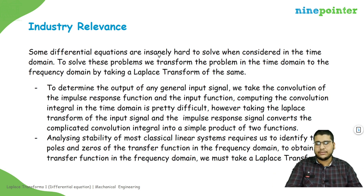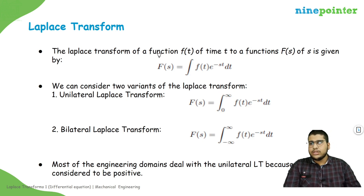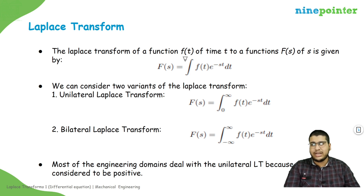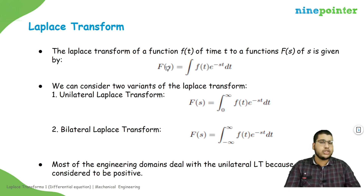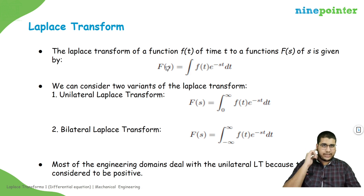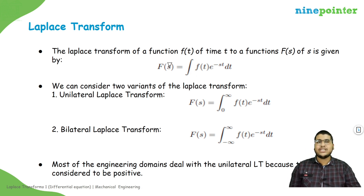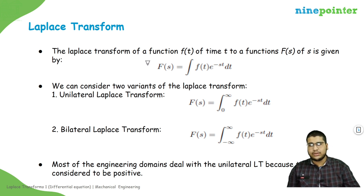The Laplace transform is defined this way: if you have an input signal varying with time t, and you multiply it with e to the minus st and integrate the result, you will get a function of s. If you apply the limits, that function of s is called the Laplace transform of f of t.